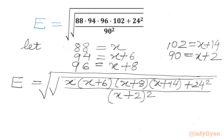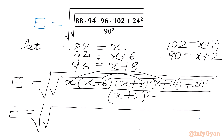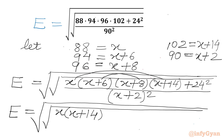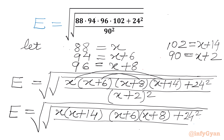Now I will consider x and x plus 14 altogether, and x plus 6 and x plus 8 altogether. Let us write expression e equal to square root of square root. We will write x times x plus 14, then x plus 6 times x plus 8, then 24 squared, over x plus 2 whole square in the denominator.